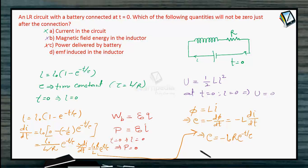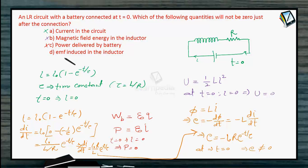Clearly, at T = 0, the EMF induced is not equal to 0 — it equals -I₀·R. So the EMF induced in the inductor is not zero at T = 0, and therefore option D is the correct answer.